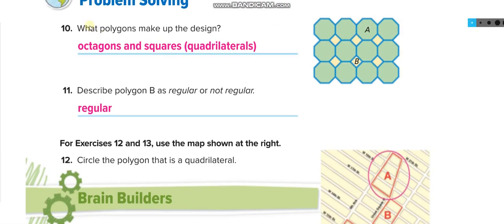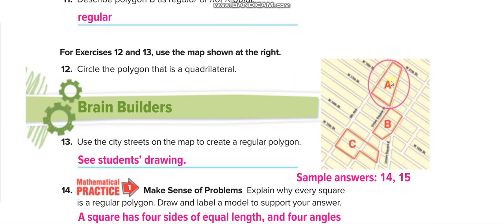Here: what polygons make up the design? For shape A, count the sides: one, two, three, four, five, six, seven, eight — so A is a regular octagon. For shape B: one, two, three, four — only four sides, it is a square, which is a quadrilateral, and all four sides are the same so it is regular. Circle the polygon that is a quadrilateral — polygon A has four sides, so we circle it.